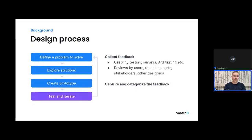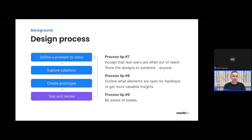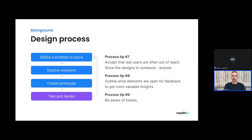A few more tips at this stage: sometimes you need to simply accept that real users are out of reach, but that's not a reason to skip this step altogether. You should show your design to someone — pretty much anyone can provide meaningful feedback on how understandable something is. It also helps to outline what elements are open for feedback and what are not, to get more valuable insights. For example, are you looking for feedback on how clear your text labels are, or is it more about the visuals?